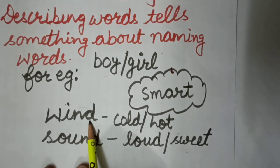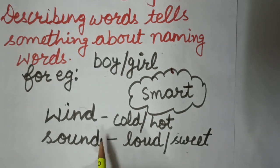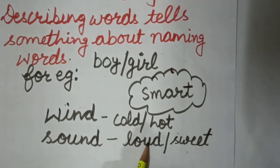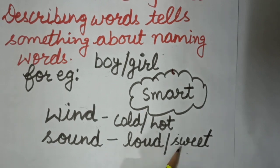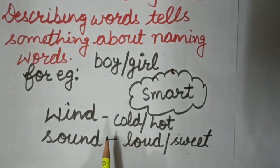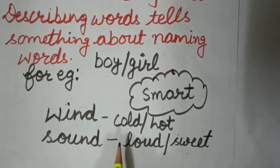For example, wind is a naming word, and when I say cold wind or hot wind, the words cold and hot are describing the wind — they tell us what kind of wind it is. Similarly, sound is a naming word, and the describing word can be loud or sweet. I hope you now understand describing words.